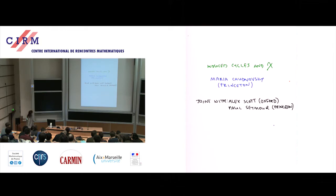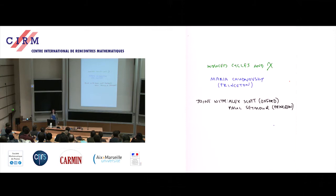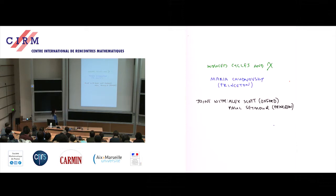Thank you for inviting me to talk and thank you for coming to listen. It's my pleasure to be here. There's this complicated contraption — I hope it won't fall off, but we'll see. So I'm talking about induced cycles and chi-boundedness, and I'll explain what it means. This is joint work with Alex Scott and Paul Seymour, who are both here.